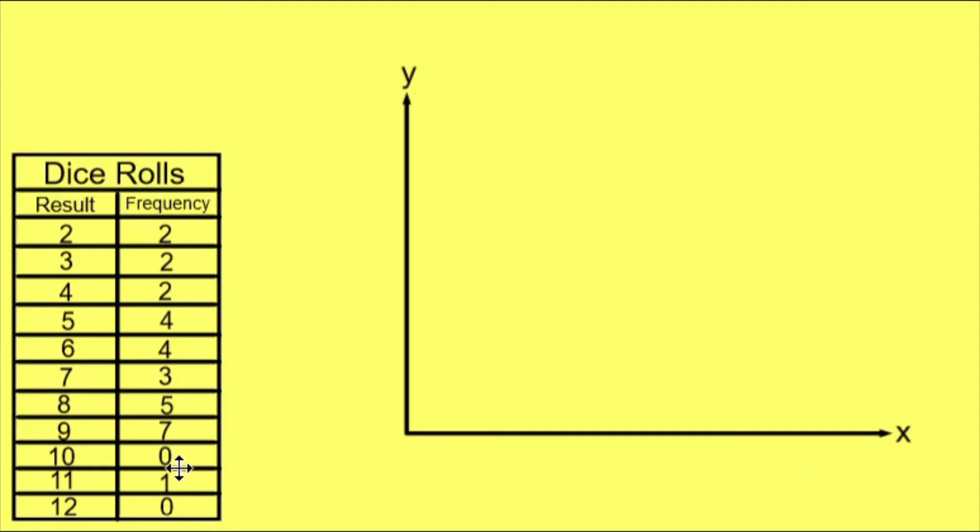Since the highest frequency I have is 7, if I scale my y-axis so that the numbers go up to 10, I know all of the data will fit. And I need a label as well for that axis, and I'm going to call it frequency.